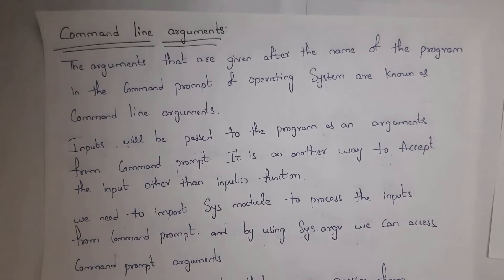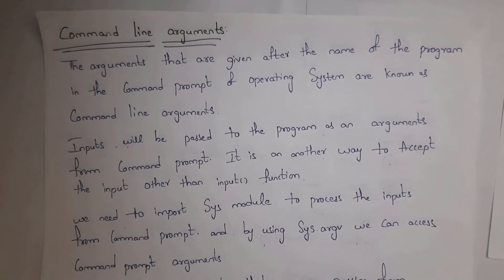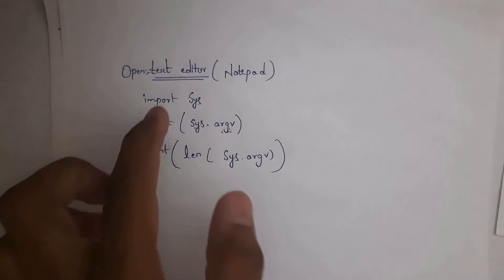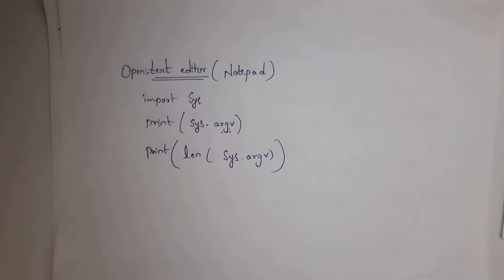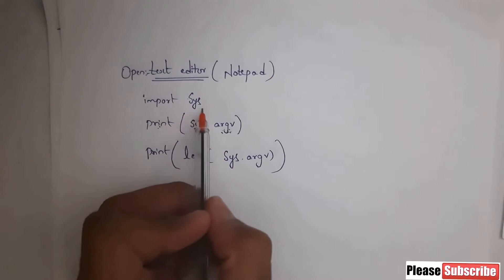Normally, we give inputs by using the input function. But whatever inputs you give on the command prompt, we call those inputs as arguments. For command line arguments, you need to import the sys module. I'll give one example. At first, you need to open any text editor like Notepad, and inside Notepad you need to write 'import sys'.